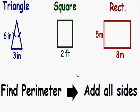In this video we are going to learn how to find the perimeter of any shape. To find the perimeter of any shape you do not need to memorize any formulas. The only thing that you need to do to find the perimeter is add all the sides of the shape. Let's see how this works by doing a few examples.